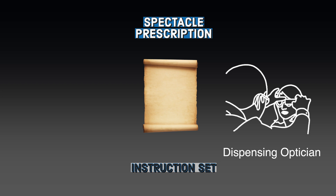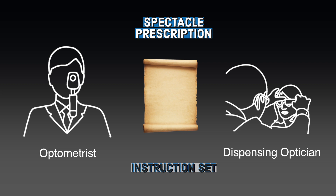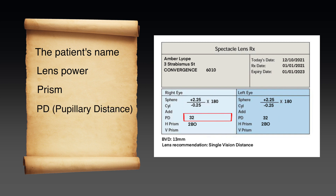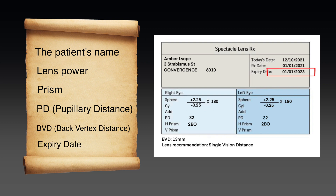A spectacle prescription is like an instruction set that a dispensing optician can use to make up a pair of glasses. This is written by an optometrist who, in the eye exam, will use various methods to calculate the appropriate lens power. If a patient requires a specific lens type, such as a single vision lens or a progressive addition lens, it will also be specified. The information written on spectacle prescriptions can vary from patient to patient, but typically it'll include the patient's name, power of their lenses, any prism to be included, the pupillary distance, back vertex distance, and the expiry date.